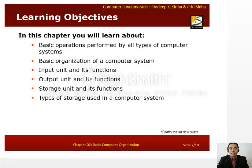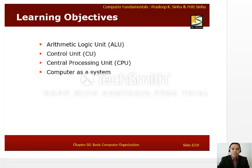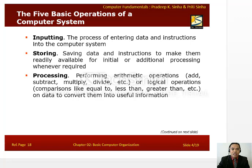In this chapter you will learn about the basic operations performed by all types of computer systems, the basic organization of a computer system, input unit and its functions, output units and its functions, storage unit and its functions, the types of storage used in a computer system, arithmetic logic units, control units, central processing units, and lastly we're going to discuss about computer as a system.